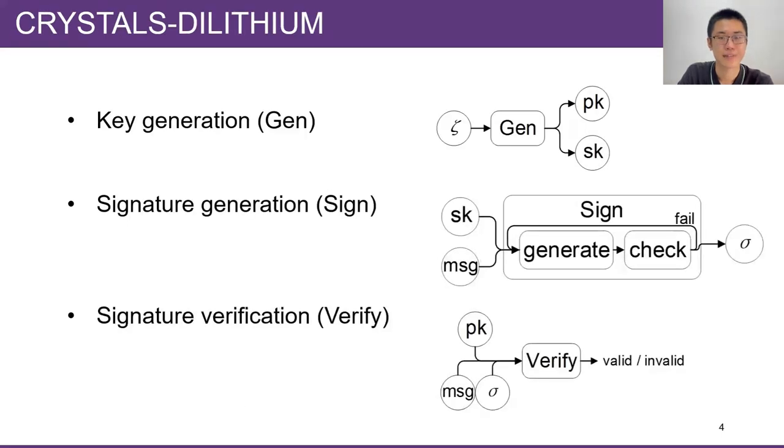This algorithm contains three phases: key generation, signature generation, and signature verification. Key generation uses a random seed to generate public key and secret key. Signature generation uses the secret key and message to repeatedly generate and check a signature until it satisfies the security conditions. Signature verification uses the public key to verify the signature.